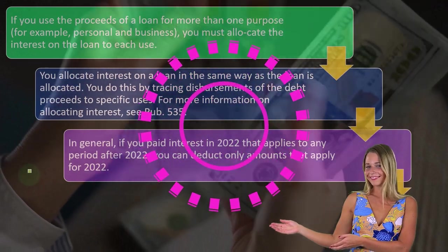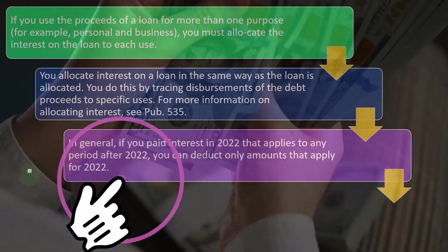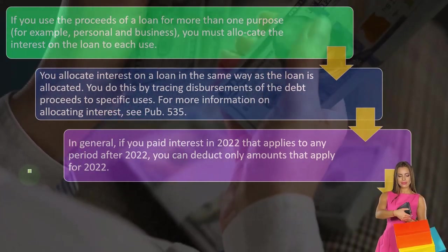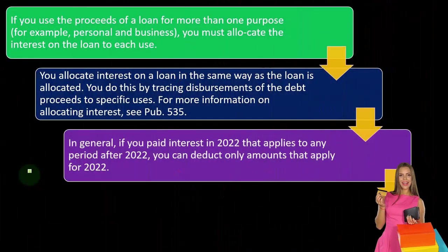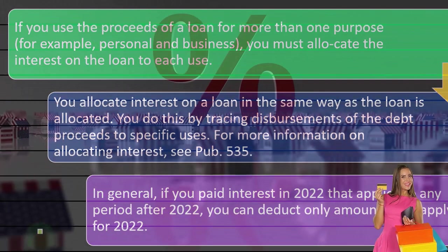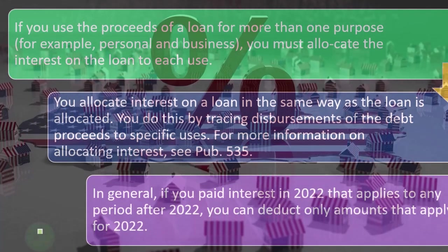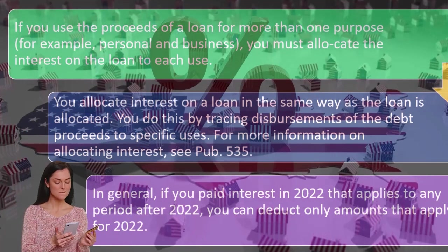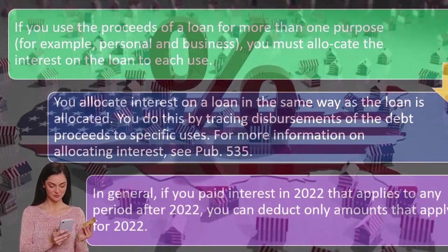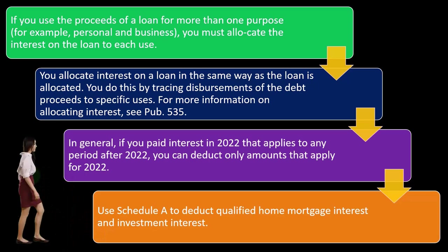In general, if you paid interest in 2022 that applies to any period after 2022, you can deduct only amounts that apply to 2022. In a cash-based system, people might think about prepaying all the interest to get more deductions upfront. But the IRS limits that — you can't make large prepayments just to lower your taxes now. Anytime you get that idea, make sure you check whether you're actually allowed to do it.